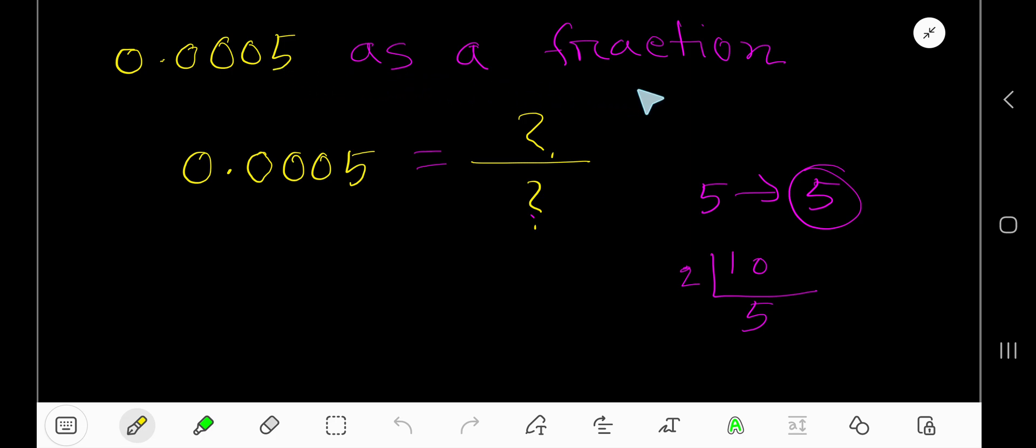To convert 0.00005 as a fraction, we need a numerator and denominator. For the numerator, just write the number ignoring the decimal - we get 5. For the denominator, for every digit after the decimal you consider 10. Here we have 4 digits after the decimal, so we write four tens as multiplication.